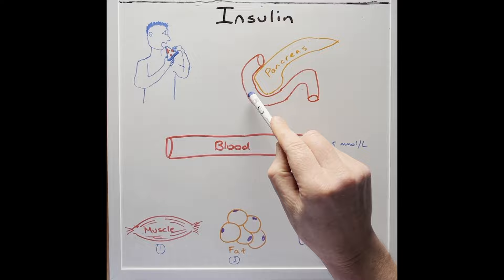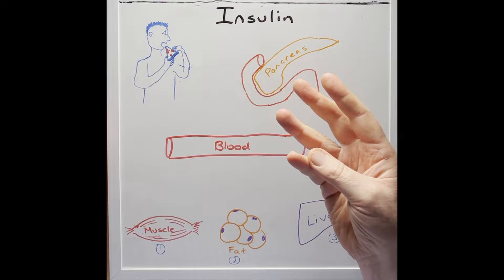So after eating a meal, let's say a slice of pizza, the pizza will enter the small intestine where it's broken down into three components: carbohydrates, fats and proteins.